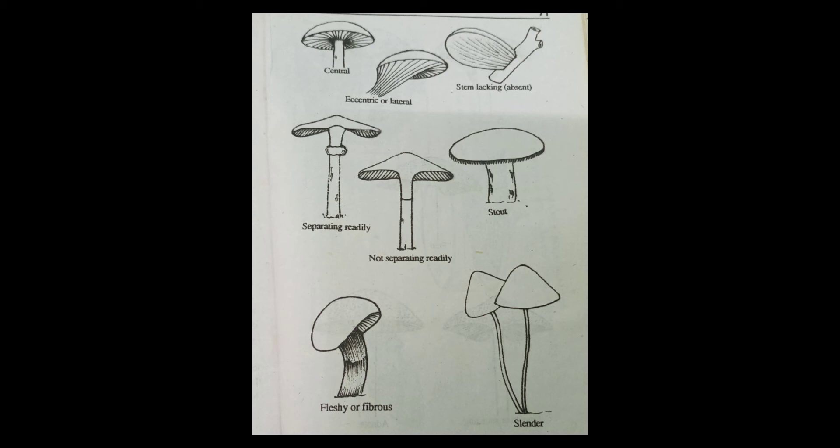Then it is known as eccentric. The shape of a stripe can be cylindrical, having the same diameter throughout; spindle-shaped, being swollen in the middle and tapering toward both extremities; or club-shaped, when it enlarges towards the top and tapers towards the base into a root-like form. The bulbous stripe is that in which the base shows a sudden enlargement.